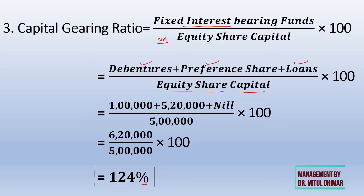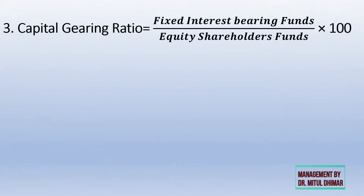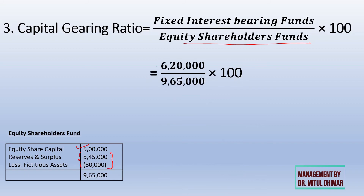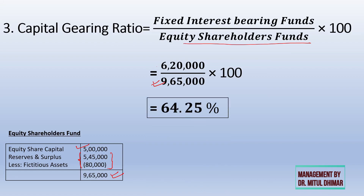This means for every 100 rupees of capital with no fixed interest bearing, there are 124 rupees of capital with fixed interest bearing. Some writers also find this ratio by dividing fixed interest-bearing capital by equity shareholders' fund — which includes not only equity share capital but also net reserves. In that case, it is 6,20,000 divided by 9,65,000 multiplied by 100, giving 64.25%.